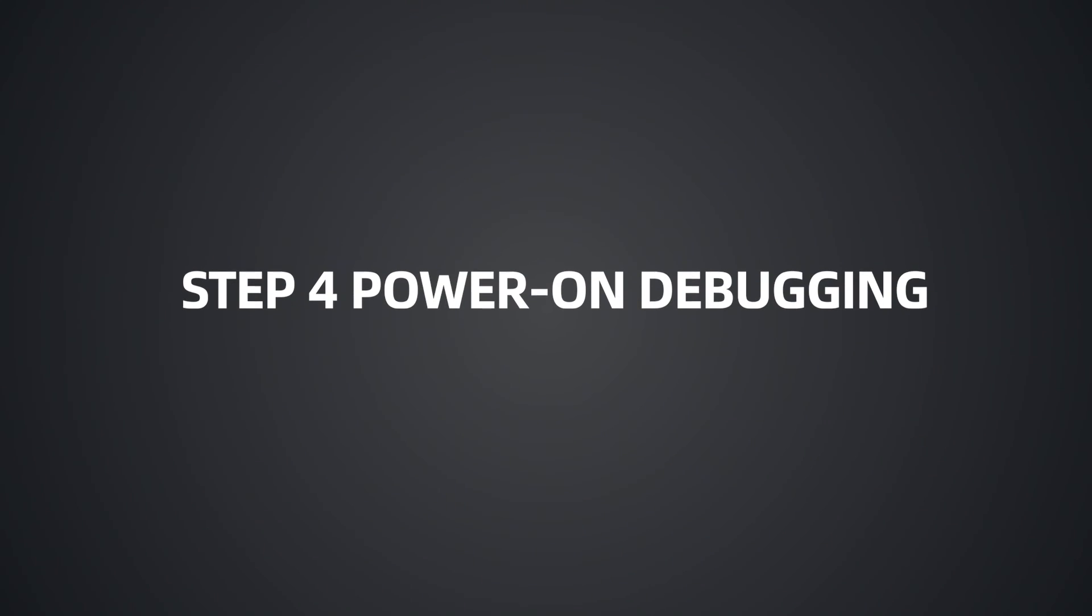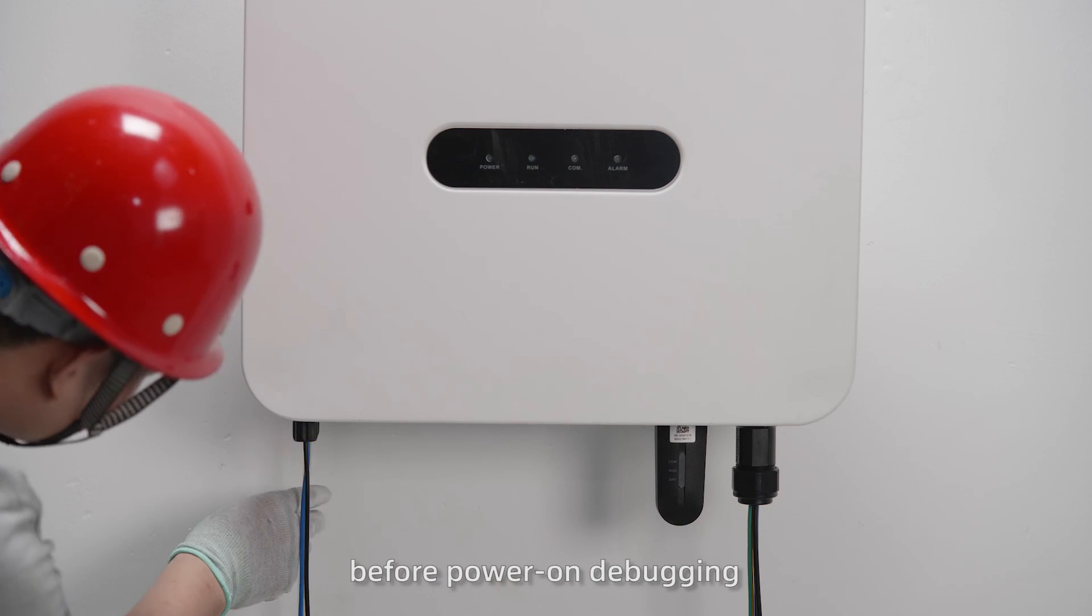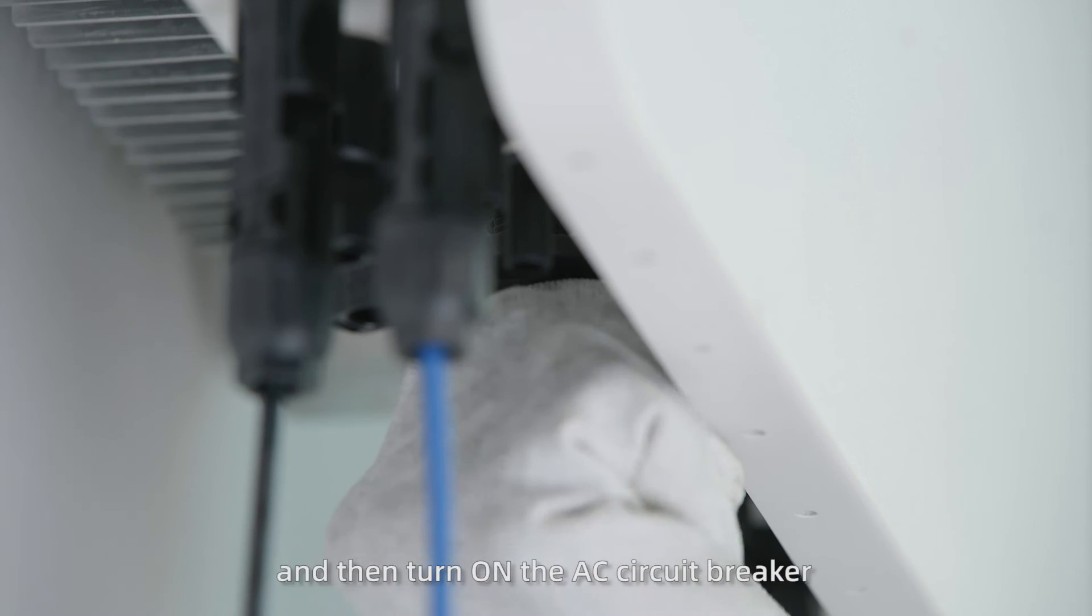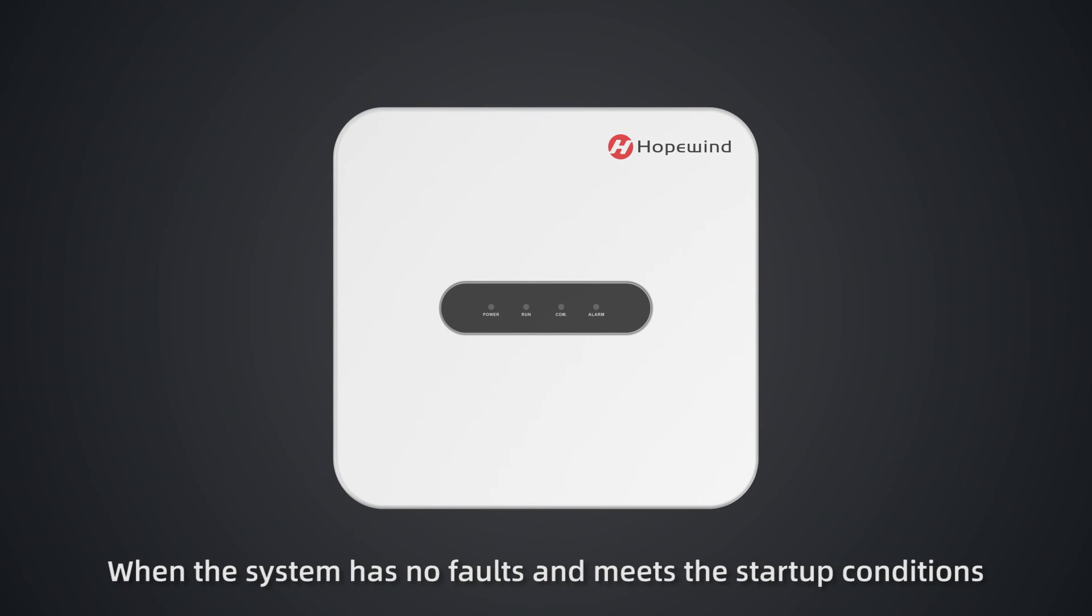Step 4 Power on Debugging. Please make sure all the cable connections are normal and stable before power on debugging. First turn on the DC switch, and then turn on the AC circuit breaker. When the system has no faults and meets the startup conditions, the inverter will start automatically.